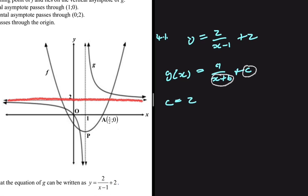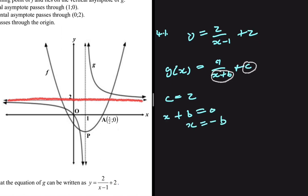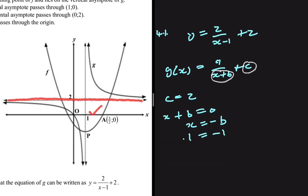Now we just need to find b using the vertical asymptote. To find the vertical asymptote, we say x plus b equals 0, which gives x equals minus b. In this example, the x value at the vertical asymptote is x equals 1. So we have 1 equals minus b, and solving for b gives b equals minus 1. So we have the value of c and the value of b.